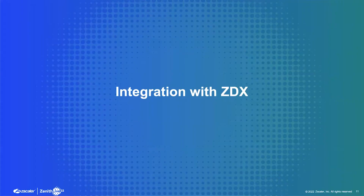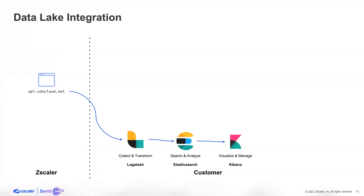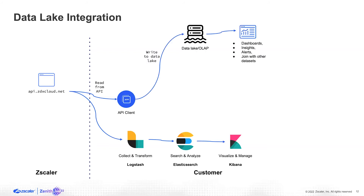Let's look at some of the different integrations we feel are a possibility with CDX APIs. One option is using our APIs to pull information into Logstash, and then using Elasticsearch and Kibana to either search and analyze or visualize and manage the data. The alternative is to build an API client, which is one of the most common integrations we've seen so far. With an API client, you can pull in specific information and write it to a data lake or an OLAP application, then use any UI to visualize the data in dashboards, get insights, set up alerts, etc. We are also exploring integrations with services like AI operations, MOOCsoft, or even Splunk.